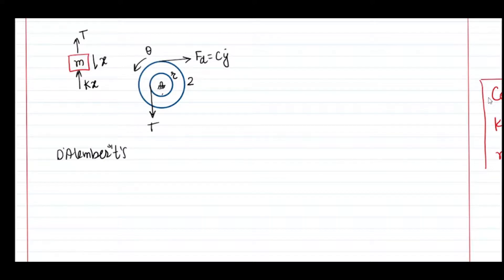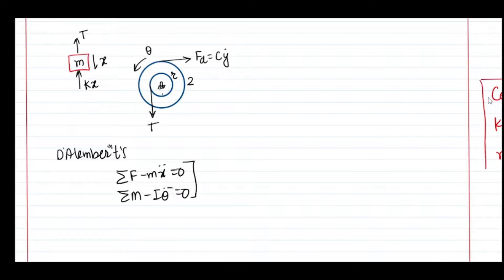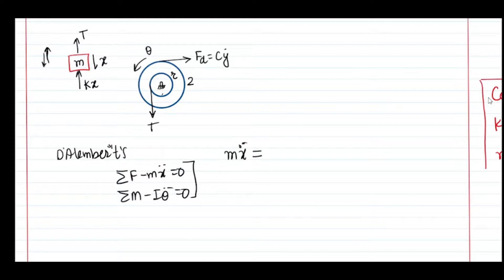After making the free body diagram we apply the D'Alembert principle: write the total forces and set the sum to zero, with the inertia term m·ẍ on the left side. For the moment equation it will be I·θ̈. We need a specific sign convention. My approach: consider the system moving away from the mean position, take that as the positive direction of motion, and write m·ẍ on the left-hand side.